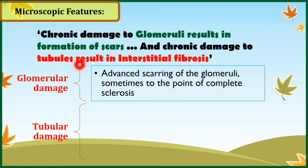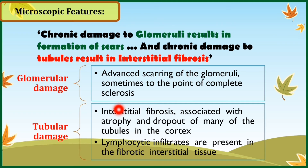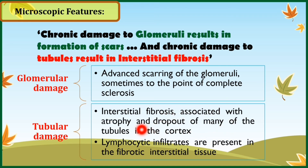The second keyword is damage at the level of tubules and interstitium, visible as interstitial fibrosis associated with atrophy and dropout of many of the tubules in the cortex. The renal tubules are atrophied and drop out, being replaced by fibrosis in the interstitium. Along with this, lymphocytic infiltrates are present in the fibrotic interstitial tissue, because damage to the tubules induces an inflammatory reaction causing lymphocytic infiltration — and these lymphocytes are actually the agents behind the interstitial fibrosis.